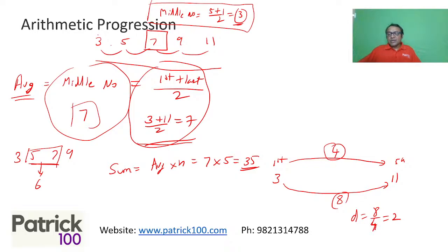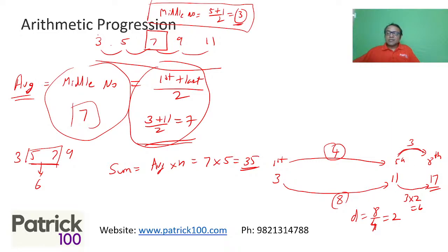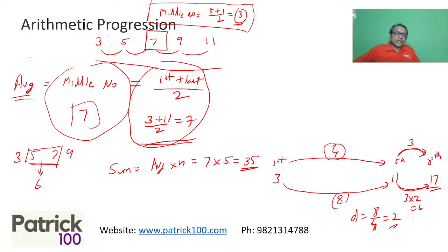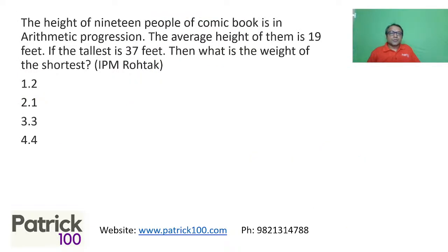To find the 8th term: it's 3 numbers ahead of the 5th term, so add 3 × d = 3 × 2 = 6 to the 5th term. 11 + 6 = 17. That's how we work it out. The key concepts are: the average, the sum, and finding d. Try to solve the problem and put the answer in the chat box.